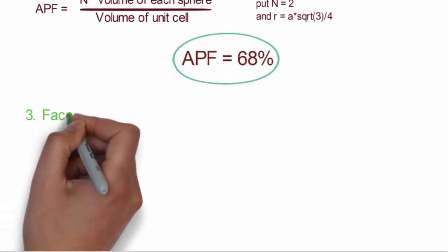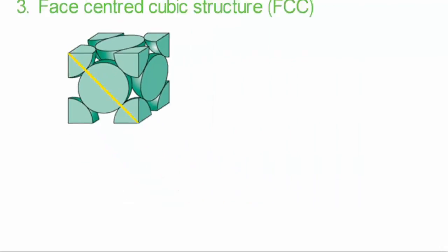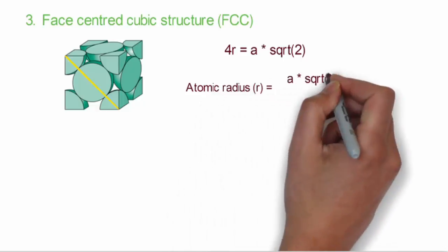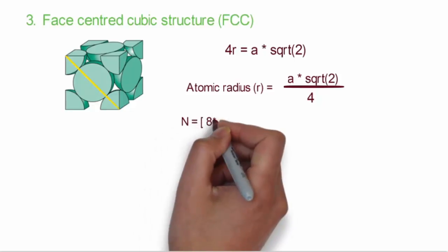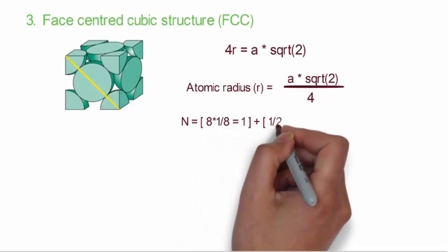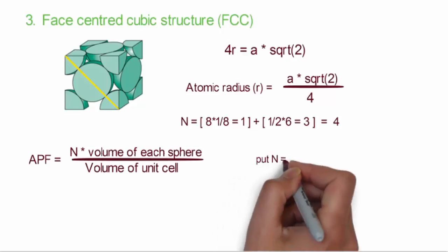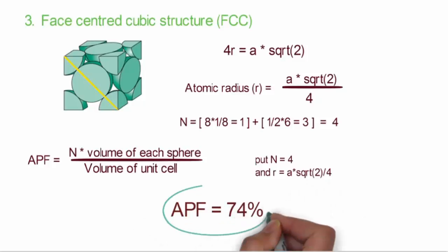For face centered cubic, the face diagonal equals √2 × A, which equals 4 times the radius. So 4R = A√2 and R = A√2/4. The effective number of atoms inside the unit cell equals 4: that is 8 × 1/8 = 1 at corners and 1/2 × 6 = 3 at face centers. Putting all values, we get an atomic packing factor of 74% for FCC.